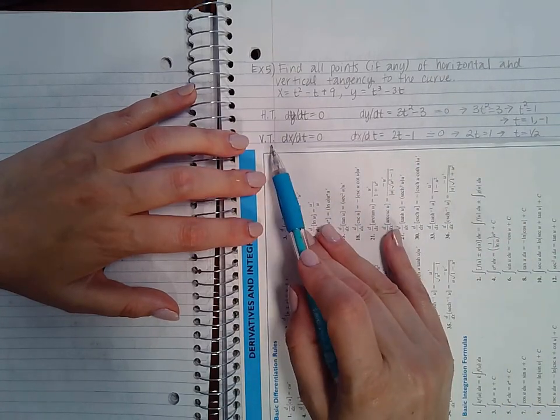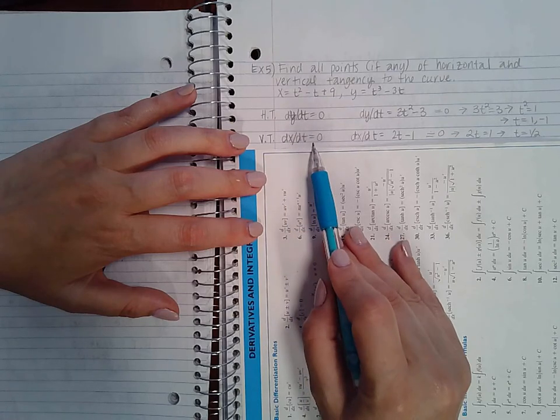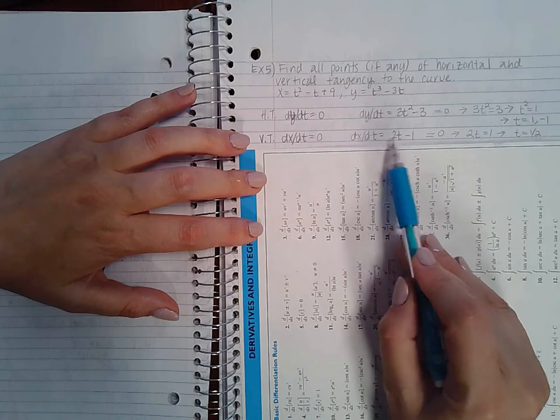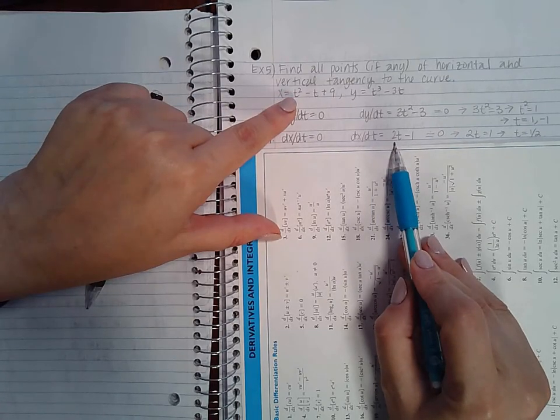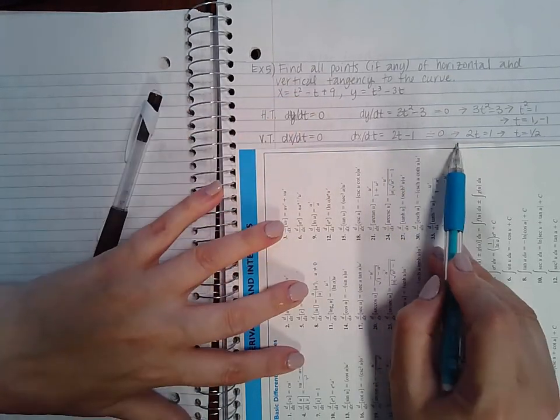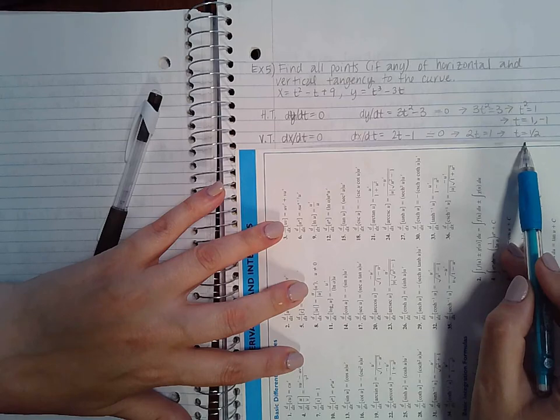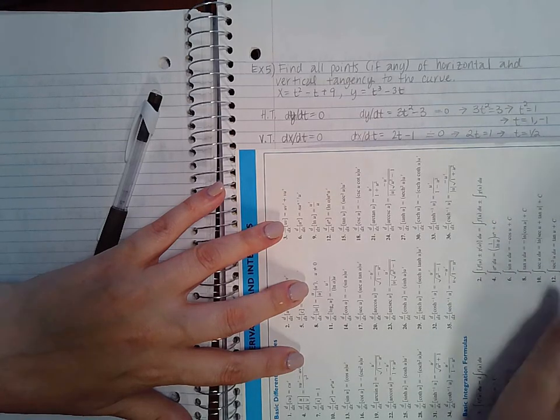Now for vertical tangency dx dt has to be set equal to 0. The derivative of x with respect to t is 2t minus 1. If I set that equal to 0 I add 1 to both sides giving me 2t equal to 1 and then divide by 2 to get t equals 1 half.